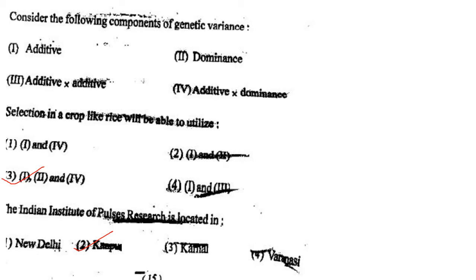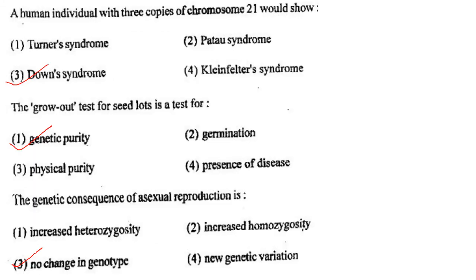Next one: The Indian Institute of Pulses Research is located in option 1, New Delhi; option 2, Kanpur; option 3, Karnal; option 4, Varanasi. Answer is option 2: Kanpur.